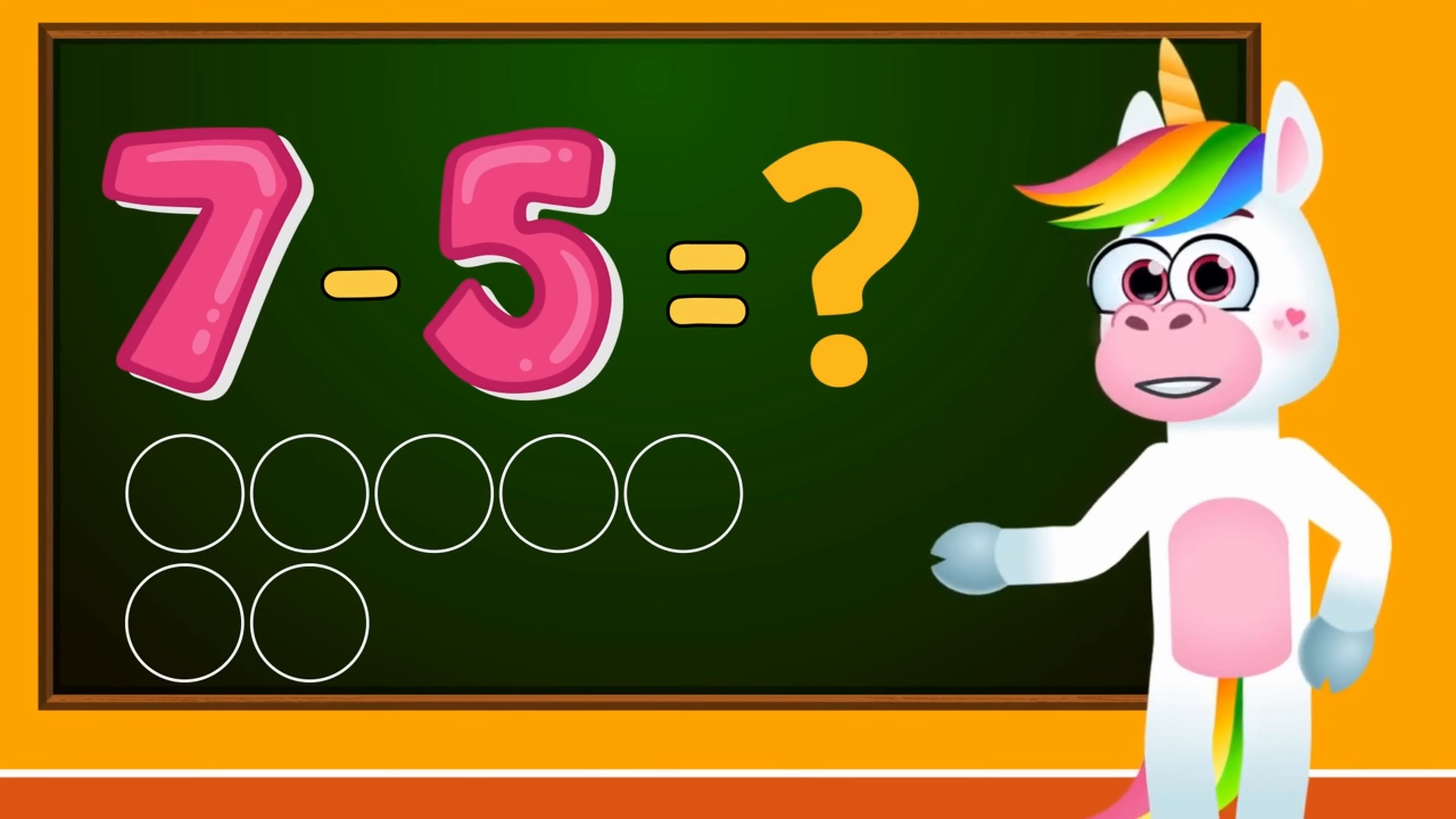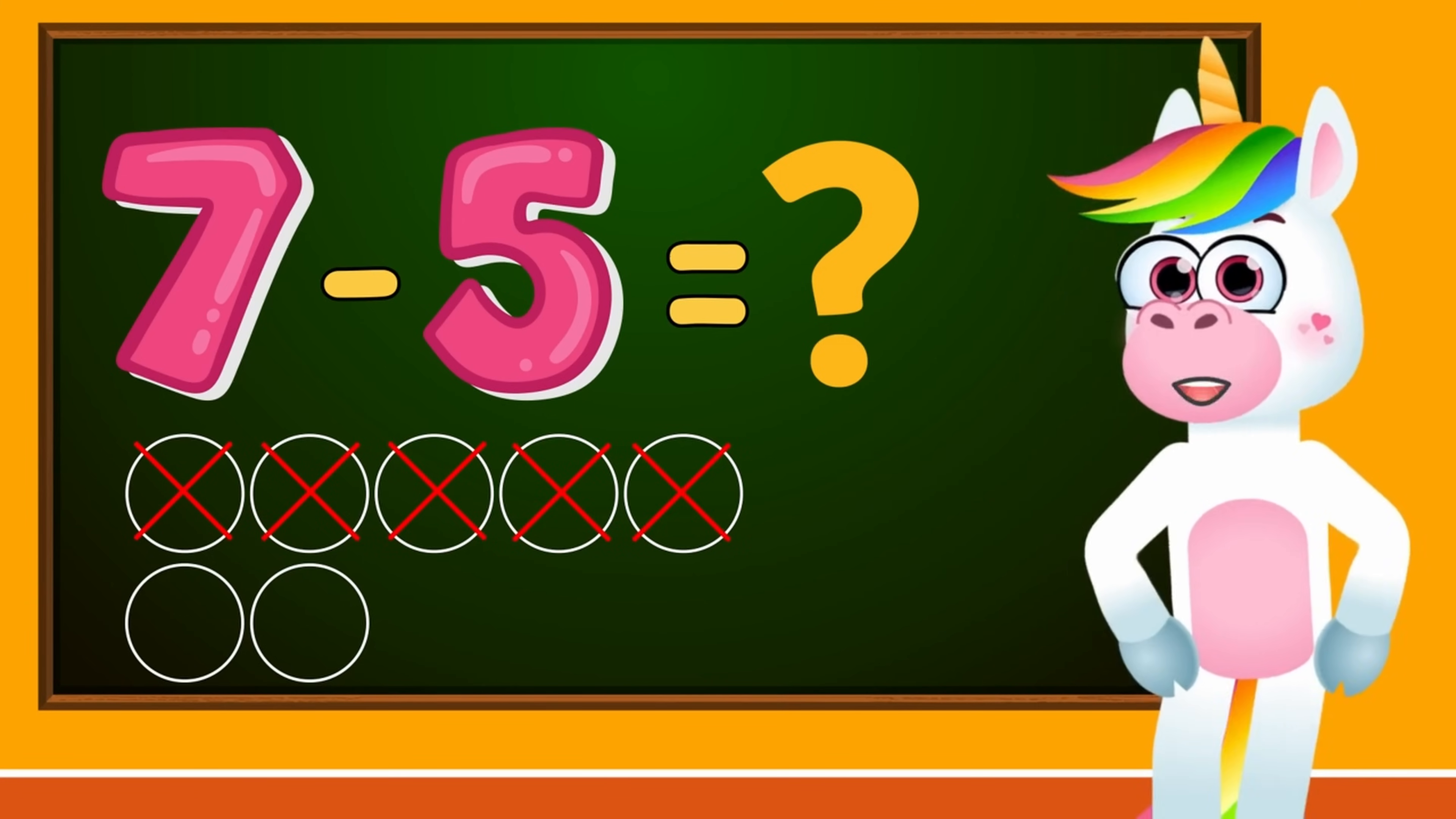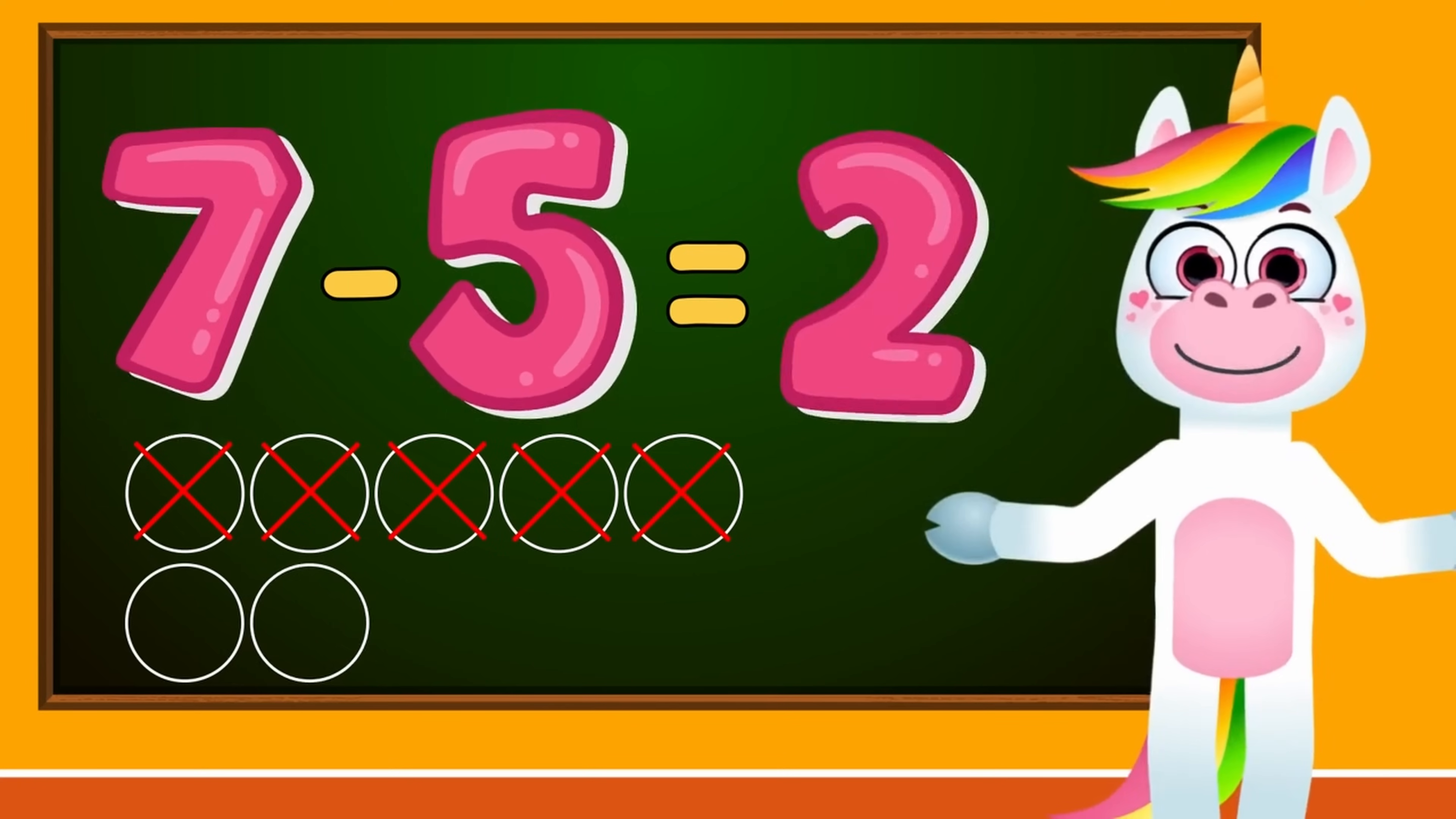1, 2, 3, 4, 5. The number of circles left is the correct result. 1, 2. So kids, 7 minus 5 equals 2.